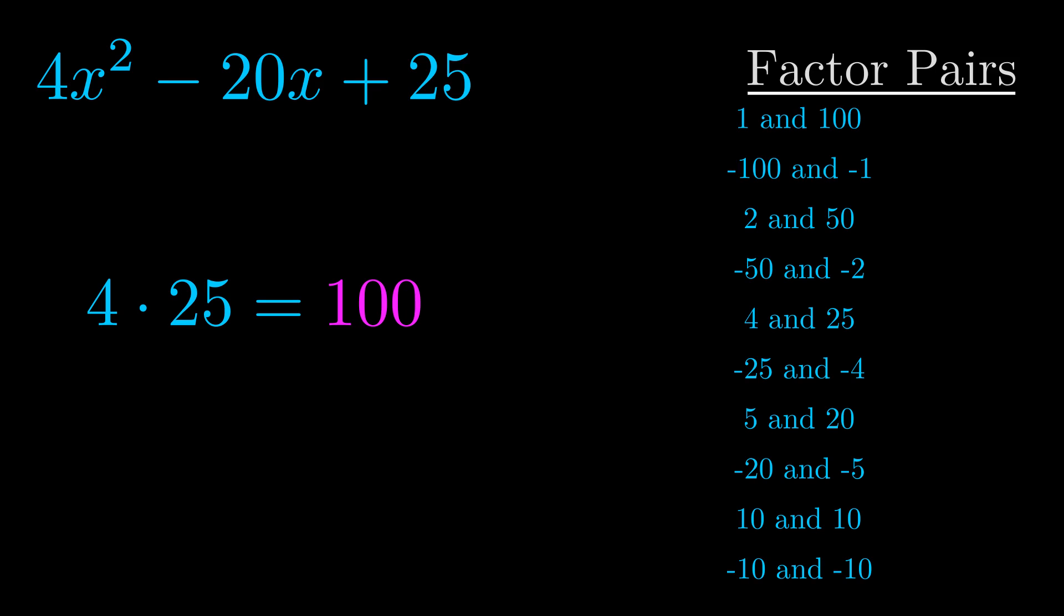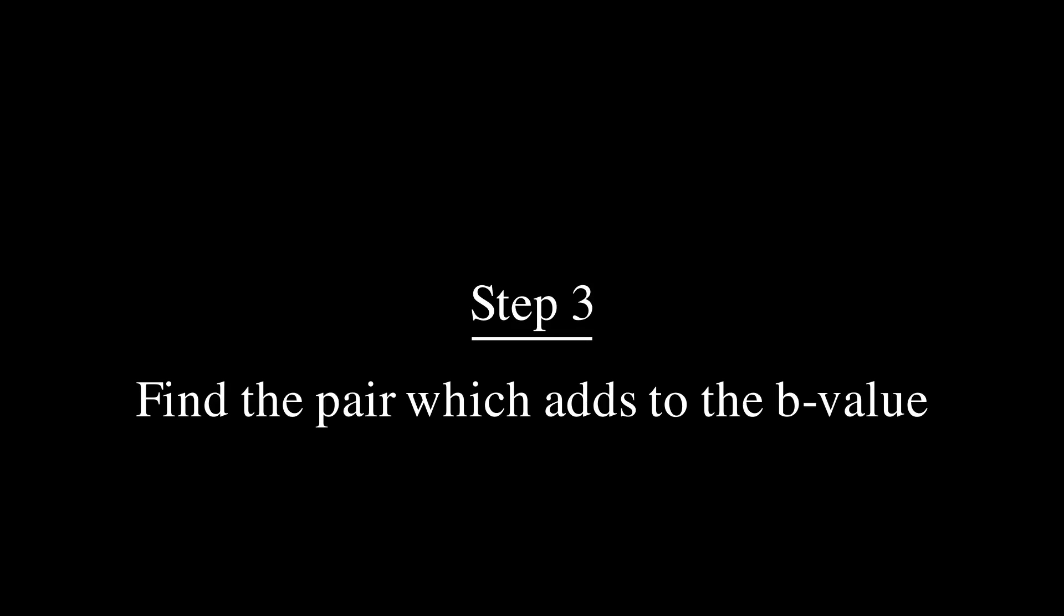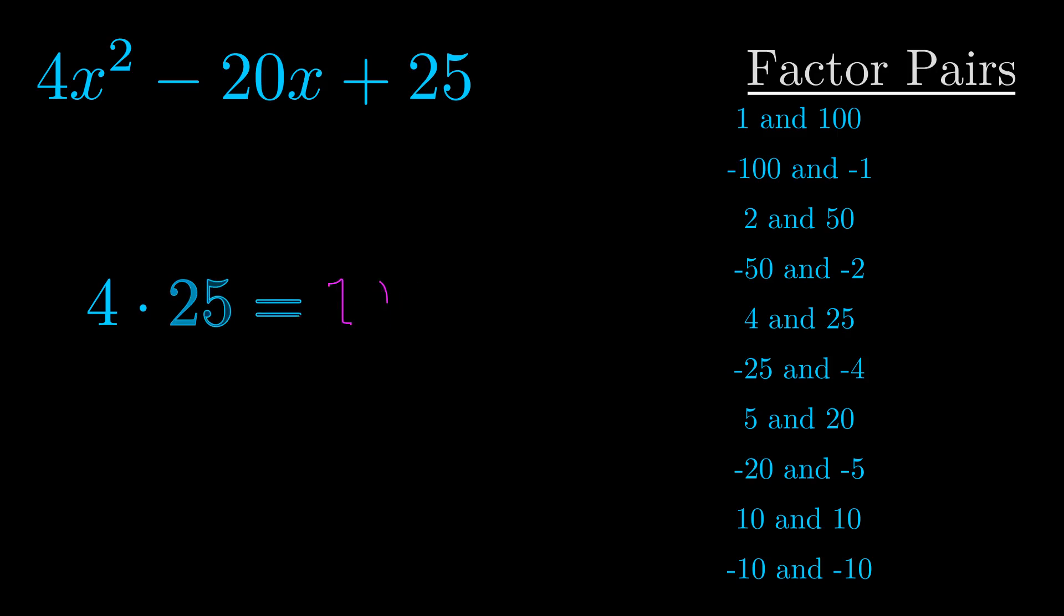Now once you have these factor pairs the goal is to find which of these pairs adds to the b value. The b value is the coefficient on the x term. That's the middle term, the one that we haven't done anything with yet. And really this is the only factor pair that we need.